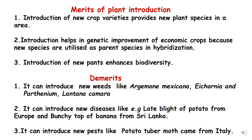Along with merits there are demerits. An introduced plant can become a weed instead of a new crop species — for example, Argemone mexicana, Ipomoea, Parthenium, and Lantana camara were introduced in India and became weeds. It can also introduce new diseases, such as late blight of potato from Europe and bunchy top of banana from Sri Lanka. Additionally, new pests can be introduced, such as the potato tuber moth from Italy.